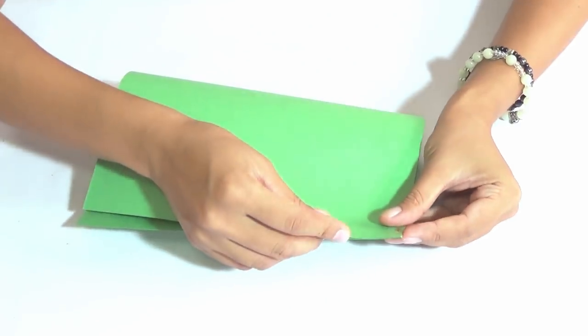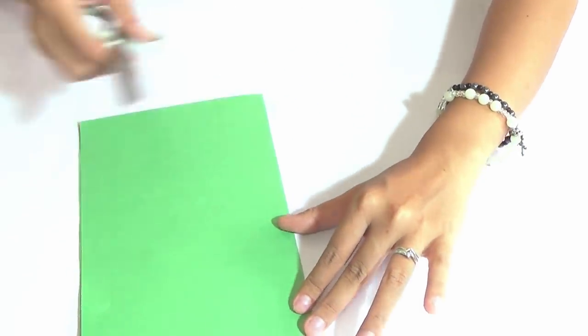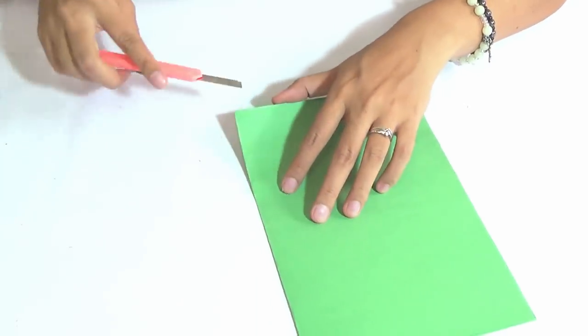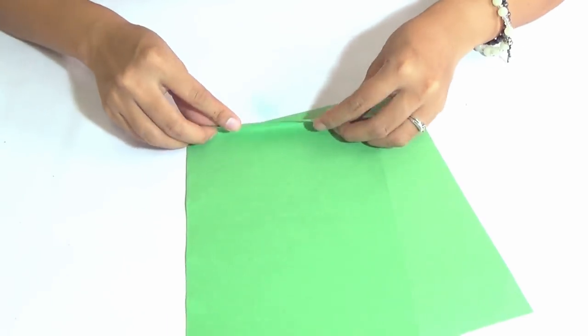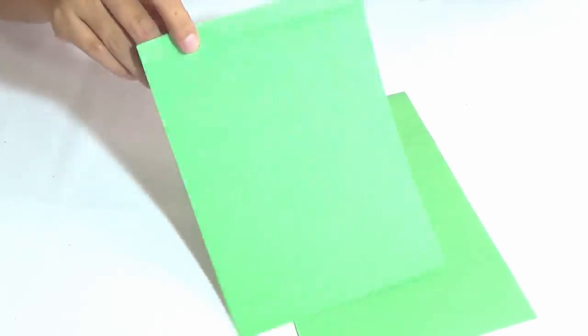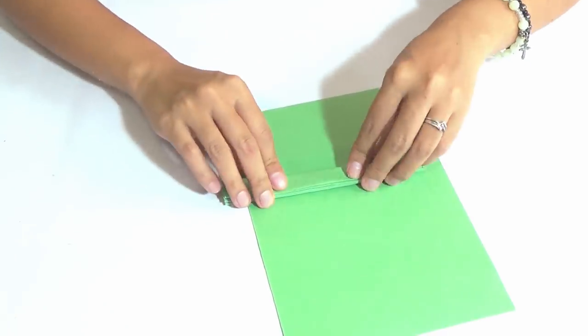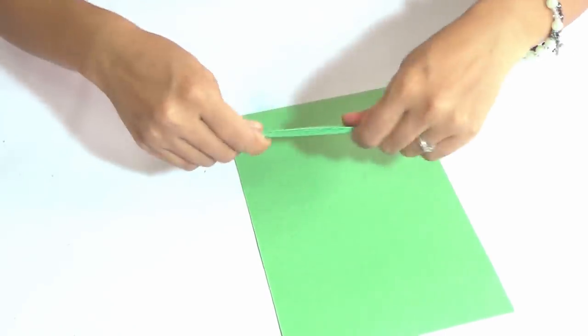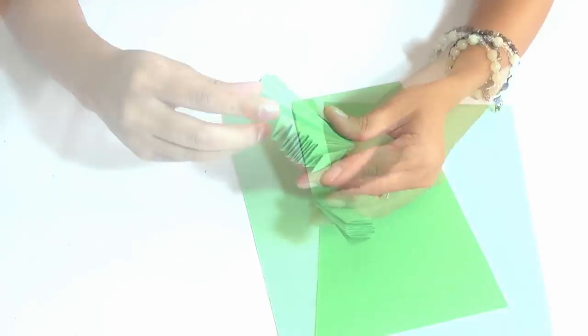To make the leaf, I cut my green paper in half and then fold it in accordion style. Then fold it in half and glue.